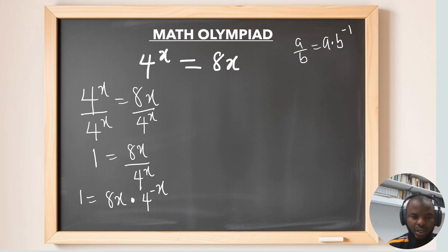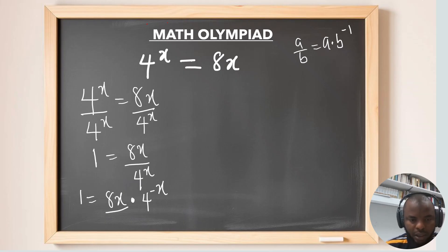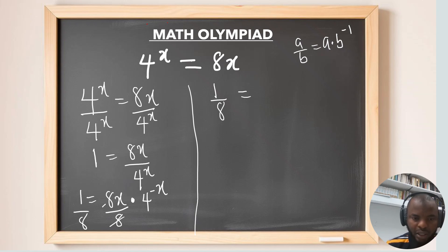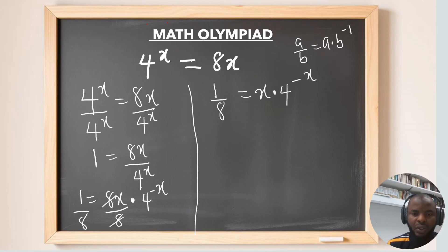This is our first expression. From here, we divide both sides by the coefficient of x, which is 8. On the left side we get 1 over 8, and the 8s cancel on the right, leaving x times 4 to the power of negative x.